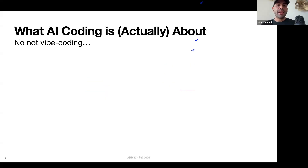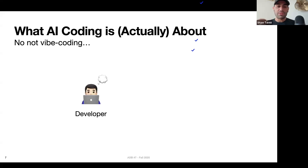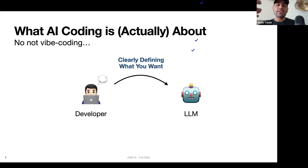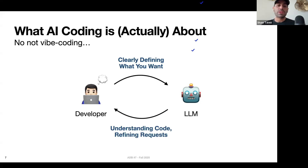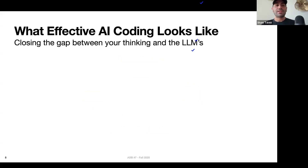So if we boil it down, what AI coding is actually about is not vibe coding and not really paying much attention to the development process. It's really this active process of thinking through what you're actually trying to build and clearly defining what you want to the large language model. And even if you have an amazing plan, no plan is ever perfect — there will always be unexpected errors. You also need to understand how the code actually works so you can refine your requests and specs. Effective AI coding is about closing the gap between what you're thinking and how the LLM is thinking.